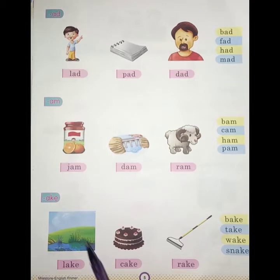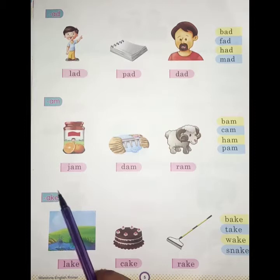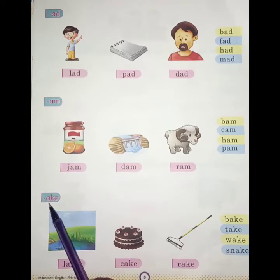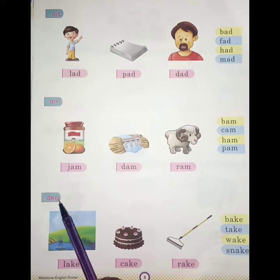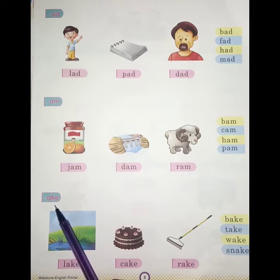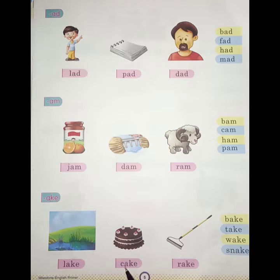And now A, K, E. So students, words which have A, K, E at the end — what sound do they make? Ake. Like L, A, K, E — lake. C, A, K, E — cake. R, A, K, E — rake.